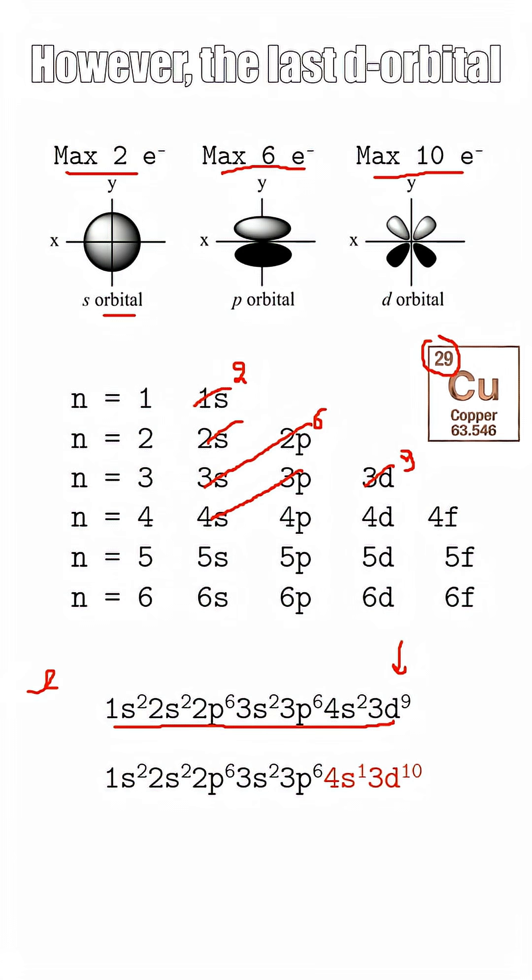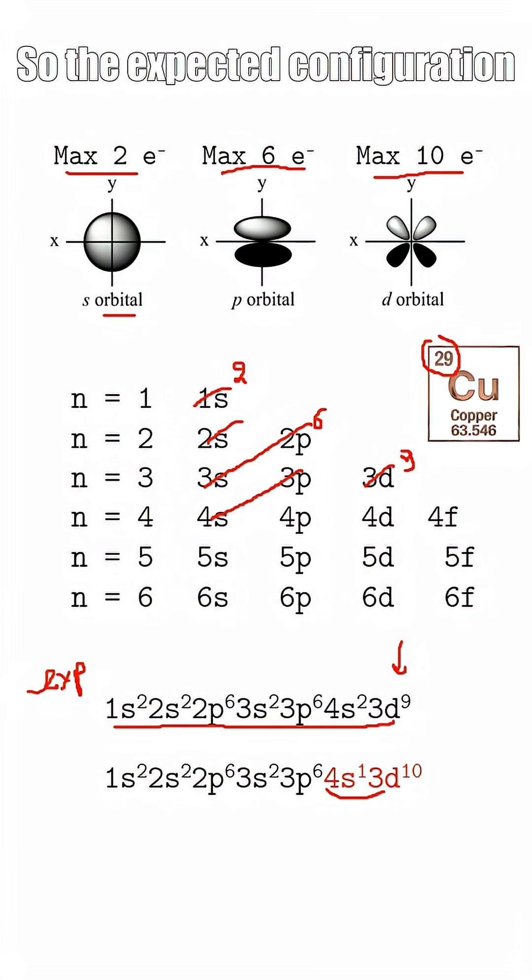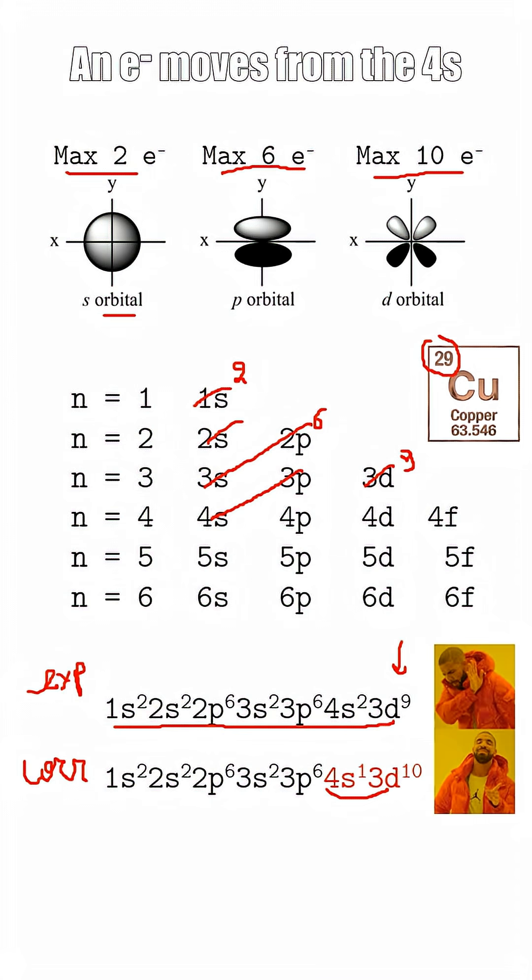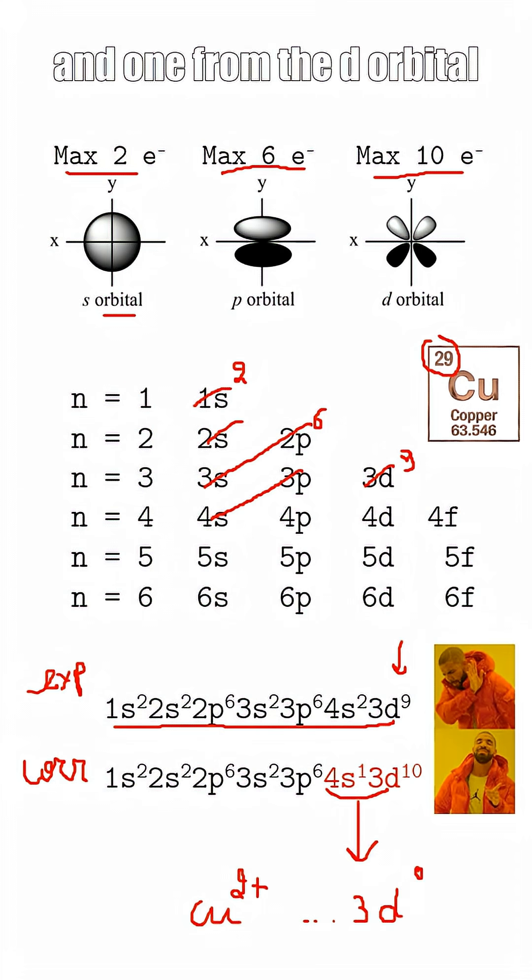However, the last D orbital is less stable when it is not full of electrons, so the expected configuration is not the correct one. An electron moves from the 4S to the 3D orbital. For the Cu2+ ion, the atom loses two electrons from the S orbital and one from the D orbital.